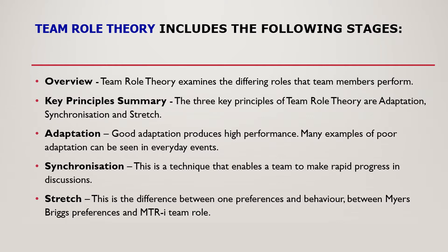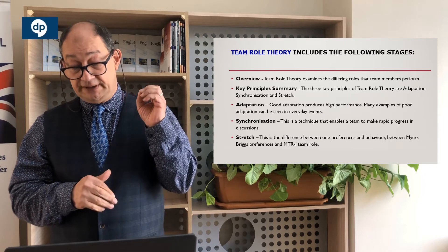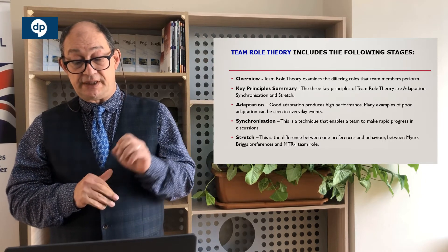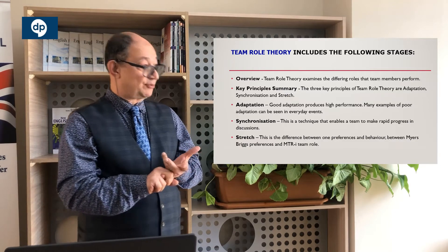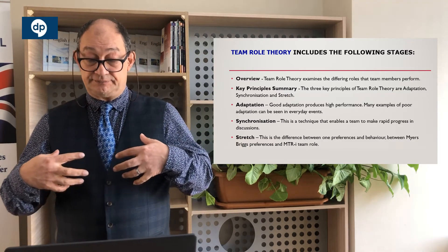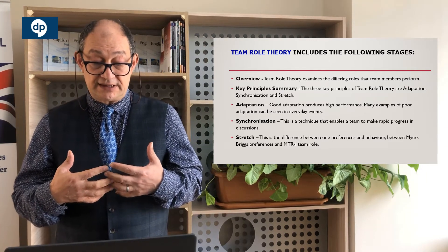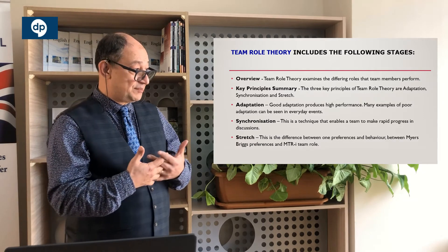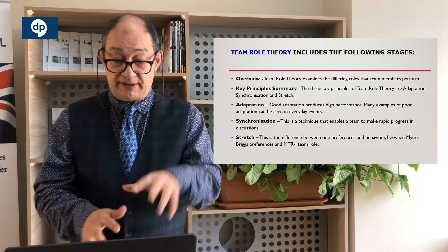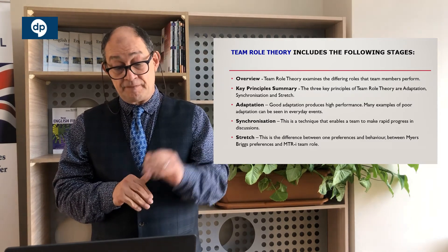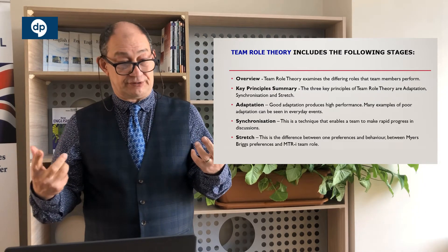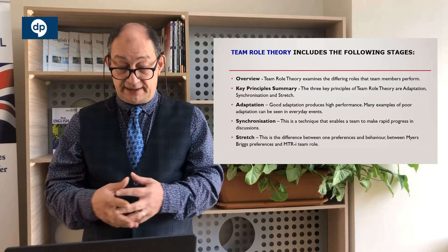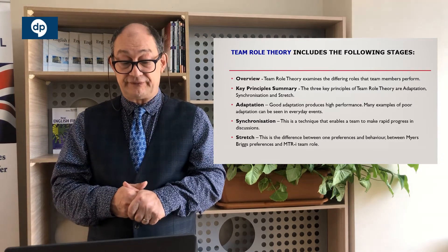The key principles for a high-productivity team are: first, Adaptation — when team members are given a role they adapt to it, they take it on and build themselves around it. Second, Synchronization — team members play together as good team players and fill in each other's shortcomings. Third, Stretch — people go out of their comfort zone, push themselves to do their best, and venture into the unknown to achieve the team's objective.